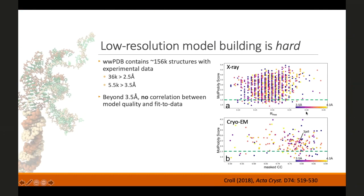About half of those last set are the newer cryo-EM maps. If we look at geometric validation statistics in terms of the MolProbity score, we see essentially no correlation whatsoever between the quality of the model and its fit to data at these resolutions. The MolProbity score is a log-scale combination of atomic clashes — atoms overlapping by less than their van der Waals radii — poor backbone conformations, and poor sidechain conformations. The maximum possible MolProbity score is just over six. The take-home message is that at low resolutions, fit to data simply isn't enough of a measure of how good your model is.